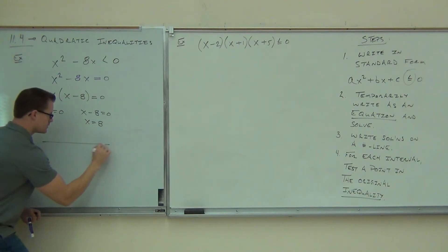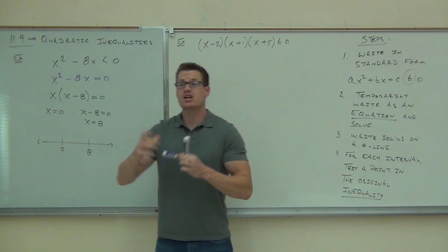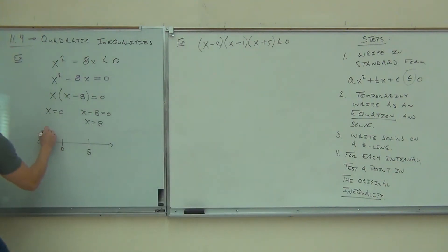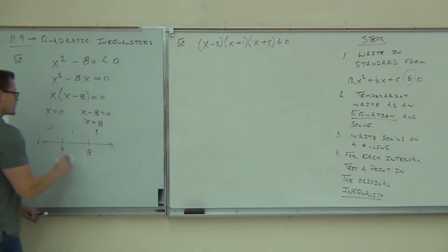So on our number line, zero comes first, eight comes second. We're going to have three intervals to check. Of course, we can't check zero, but you can check negative one, one, and nine. Those would probably be the numbers that you checked too, yeah? Those are the easiest ones to check in this case.